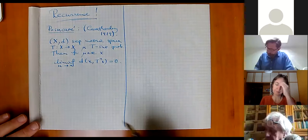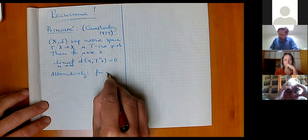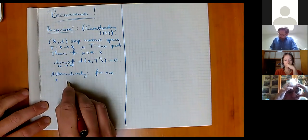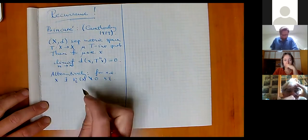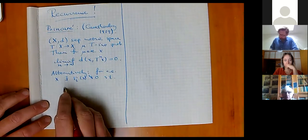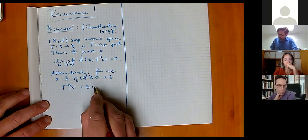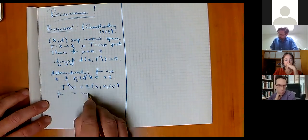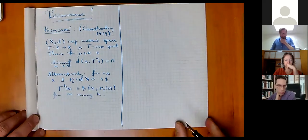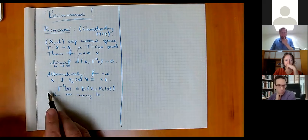Alternatively, you can say that for almost all points x, there exists some sequence r_n of distances which depend on the point and go to zero, such that if I take the k-th iterate of the point x, then it belongs to the ball of radius r_k centered at x for infinitely many k. So this talk will largely be about what kind of sequences r_k we can take so that this property holds for almost all points x.